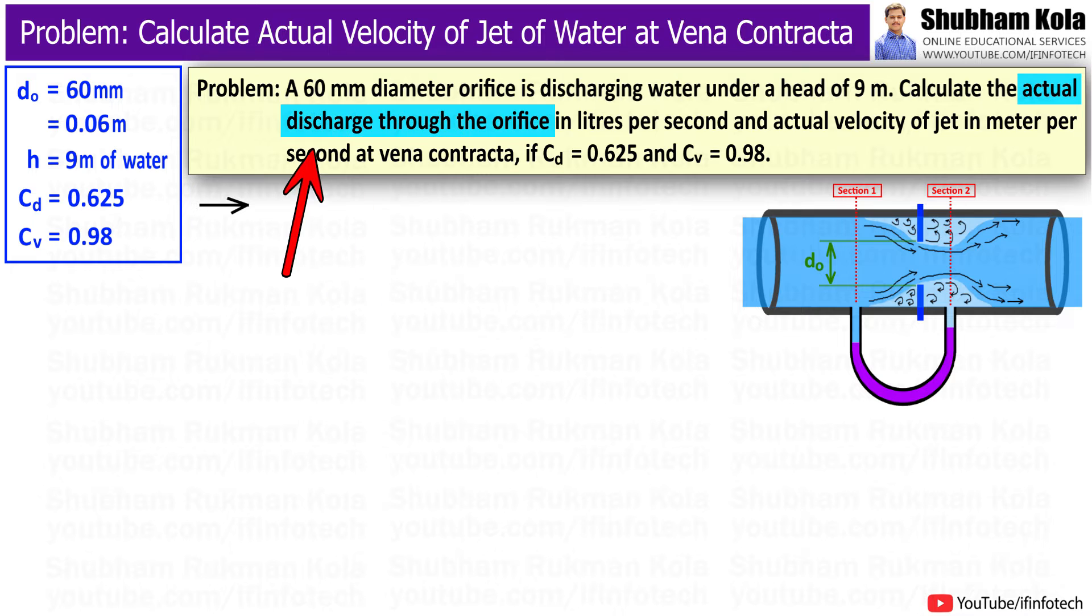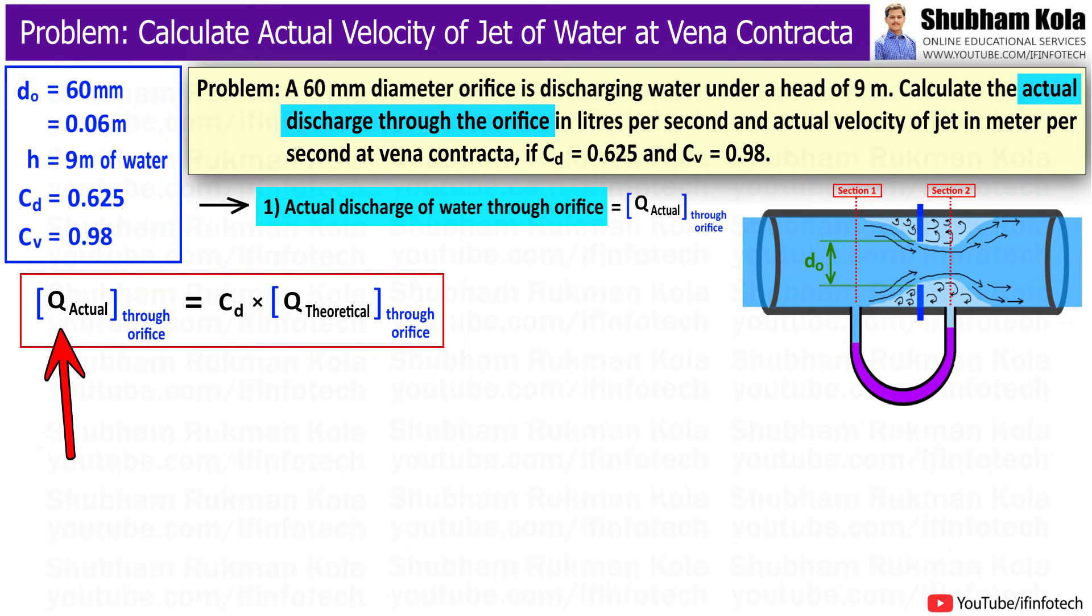In this problem, we want to calculate the actual discharge of water flowing through the orifice. To calculate this, I will use the formula for actual discharge, which is the product of coefficient of discharge CD and theoretical discharge Q_theoretical.